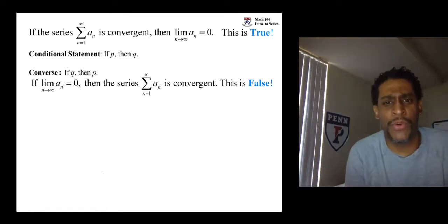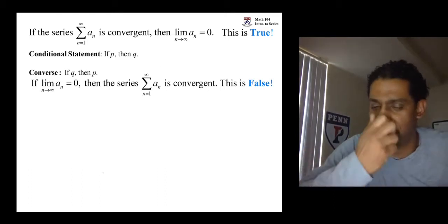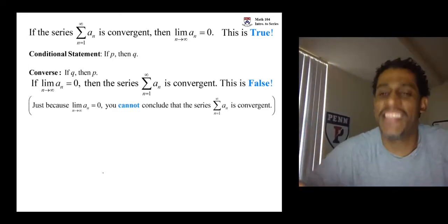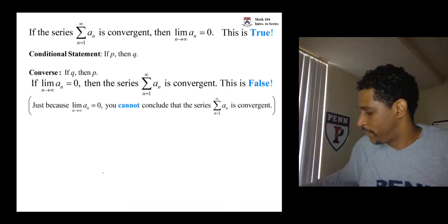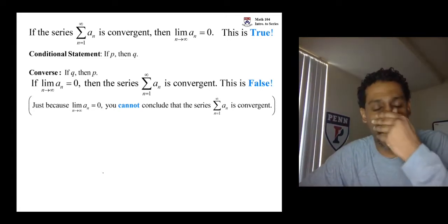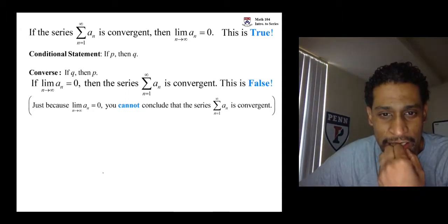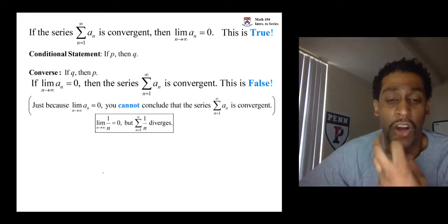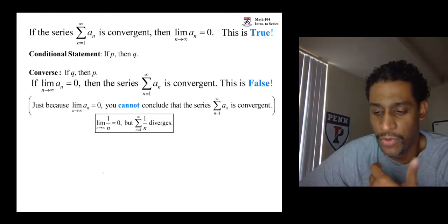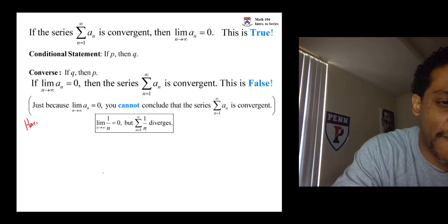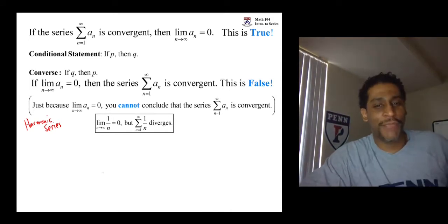To show something is false, you want a counterexample. Just because your limit is zero, you can't automatically conclude the series is convergent — it has a chance to converge, but you can't just say it's convergent. Here's an example: the series one over n. The limit of those terms is zero, but this particular series — it's called the harmonic series — is divergent.